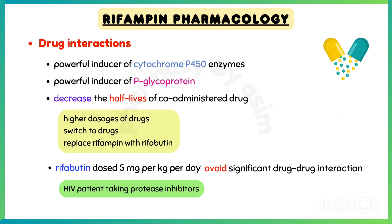Regarding drug interactions, rifampin is a powerful inducer of cytochrome P450 enzymes and P-glycoprotein, so it interacts with many other drugs. It can decrease the half-lives of co-administered drugs metabolized by these enzymes. This may necessitate higher dosages for these drugs, a switch to drugs less affected by rifampin, or replacement of rifampin with rifabutin.